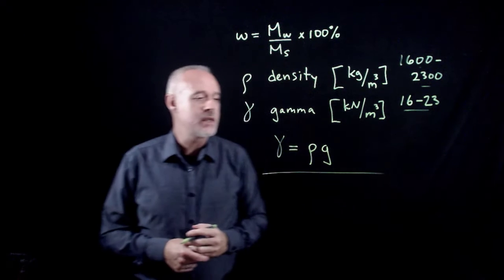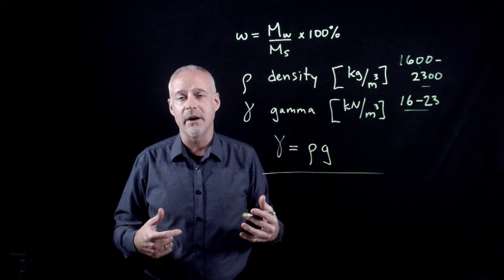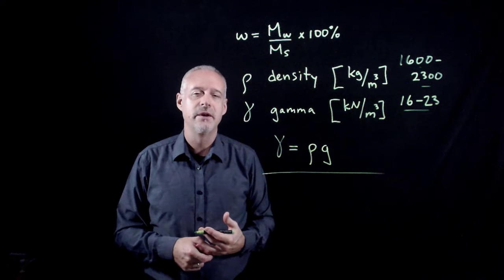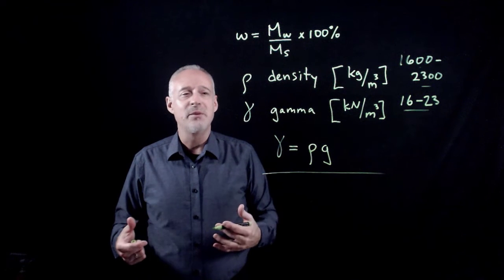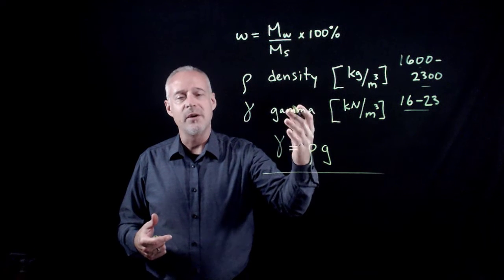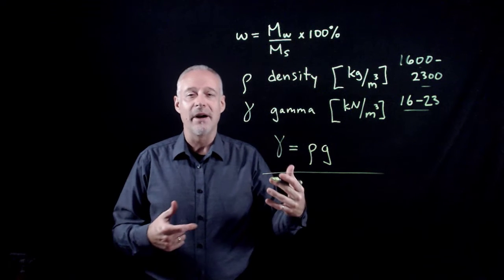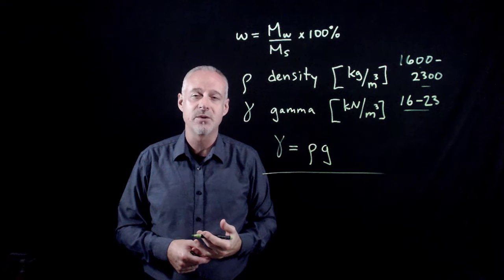If you are doing labs, particularly the compaction or proctor lab as it's sometimes called, you will need to convert your measurements of density or unit weight into dry density or dry unit weight by correcting it by whatever the measured water content is in the soil.